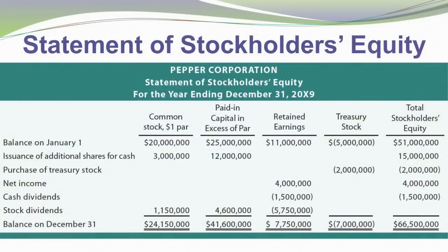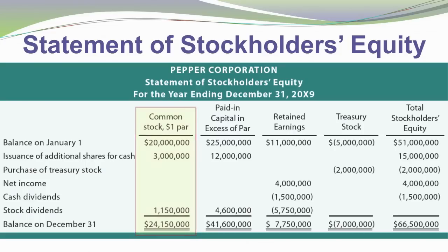Here's an example of a Statement of Stockholders' Equity. It looks like a lot of information, but let me break it down. Let's just look at the first column — the common stock account. At the beginning of the year, there was $20 million total par value of all the shares outstanding. During the year, an additional $3 million in shares were issued, boosting the par value by $3 million. Then toward the end of the year, there was apparently a stock dividend, which also caused an increase in par value of $1,150,000, giving us our ending balance of $24,150,000. That's one of the equity accounts.